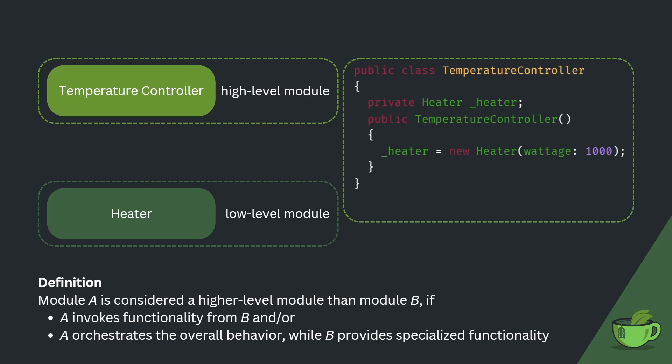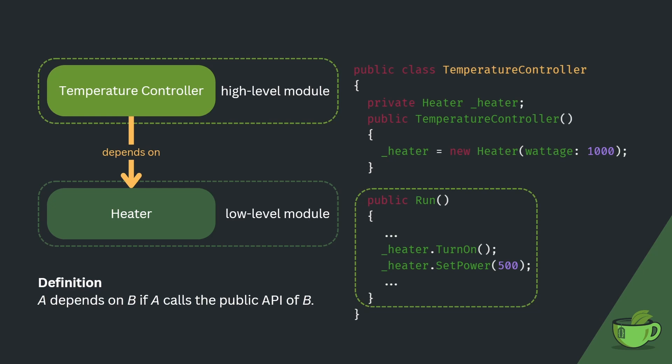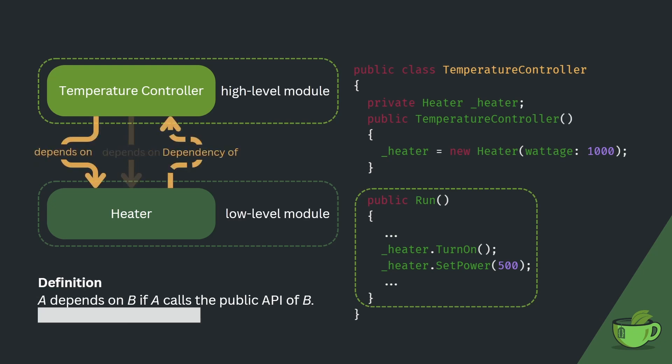The temperature controller has a run function in which it uses functionality provided by the heater via its public API. A real temperature controller would require more than just the heater to function, but this is a didactic example. Because the temperature controller requires the heater to do its job, we could say that it depends on the heater. A depends on B if A calls the public API of B, which means the heater is therefore a dependency of the temperature controller.